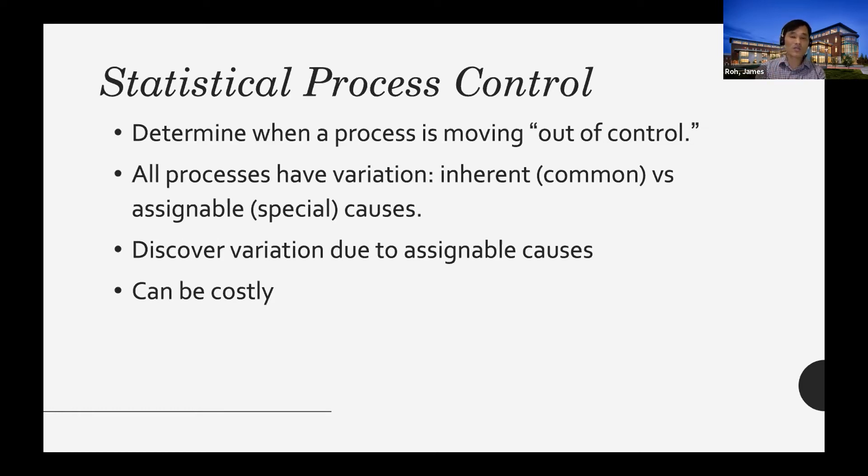If we don't measure and visualize it, we cannot tell whether this is inherent cause or assignable cause. By using statistical process control charts we can spot what is assignable cause, and if there is such thing then you have to investigate and fix it right away if possible. However, this is a costly investment because measuring the data and writing it is not easy, and people don't like to be measured and evaluated by other people. It can be costly and you can face some resistance.